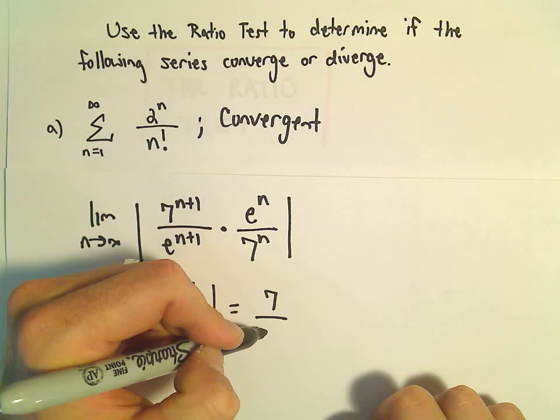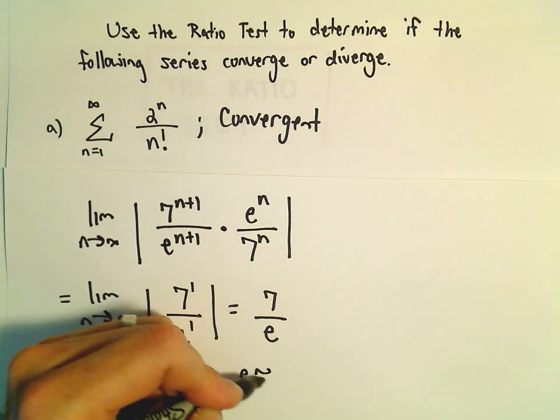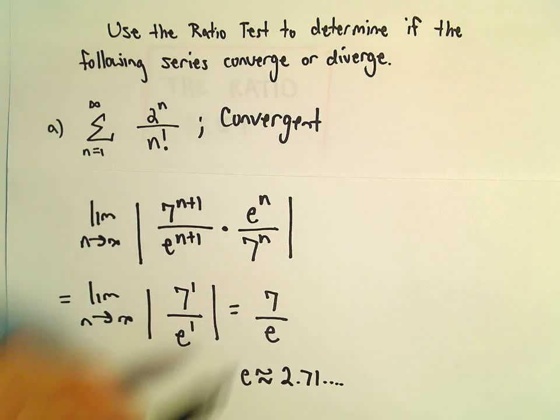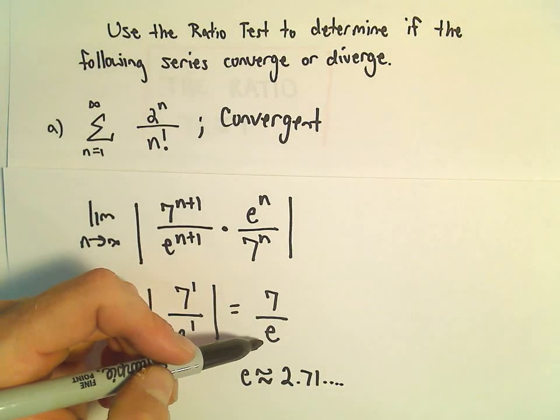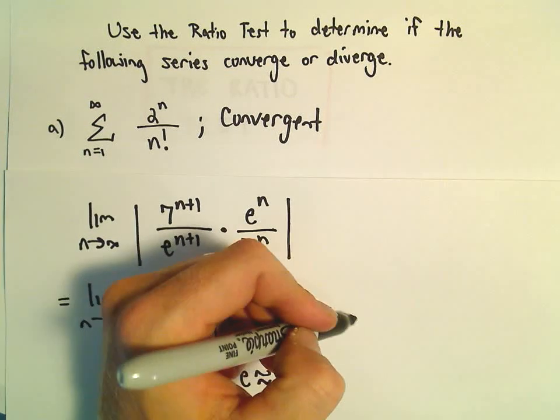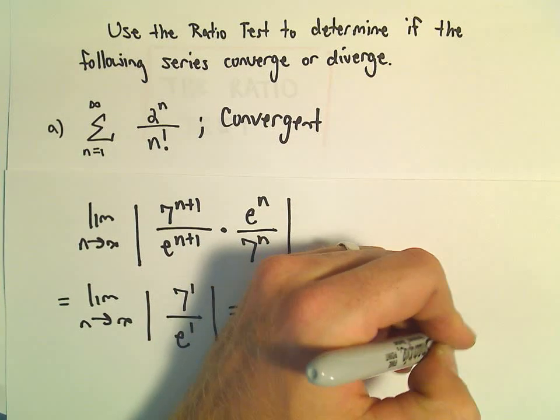Well this limit is just 7 over e. But e again is roughly 2.71 dot dot dot. So 7 over 2.71 whatever, that's definitely a number greater than 1. And since it's greater than 1, that tells us that our series is divergent.